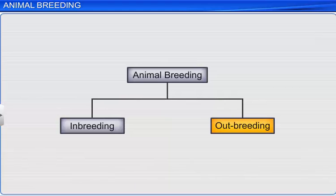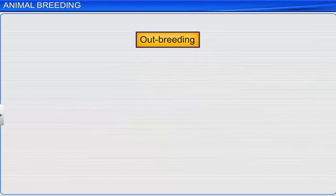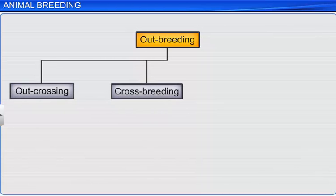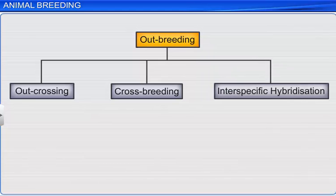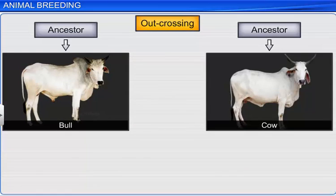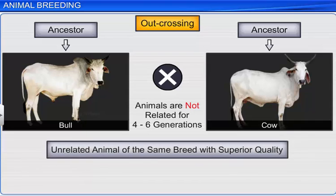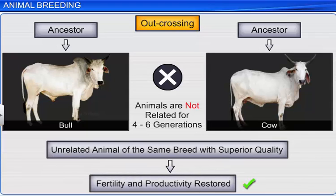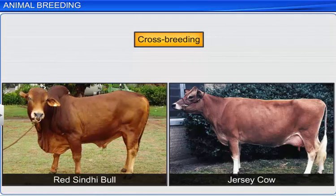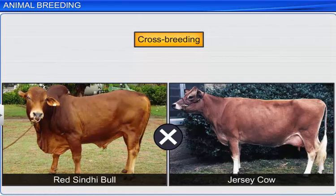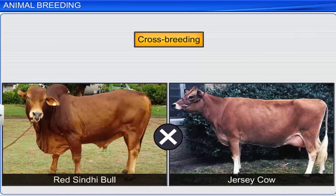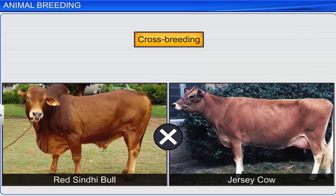Outbreeding can be carried out in three ways: outcrossing, crossbreeding, and interspecific hybridization. Outcrossing is mating between animals of the same breed but with no common ancestors for up to four to six generations on either side. This type of breeding overcomes inbreeding depression. Crossbreeding is mating between animals of superior quality belonging to different breeds, to produce hybrids possessing superior qualities of both their parents.